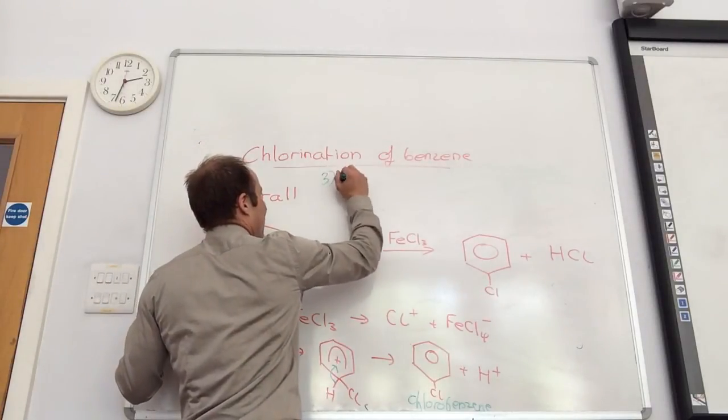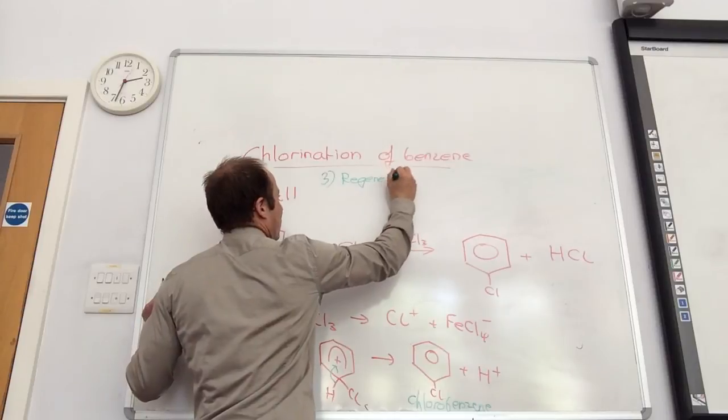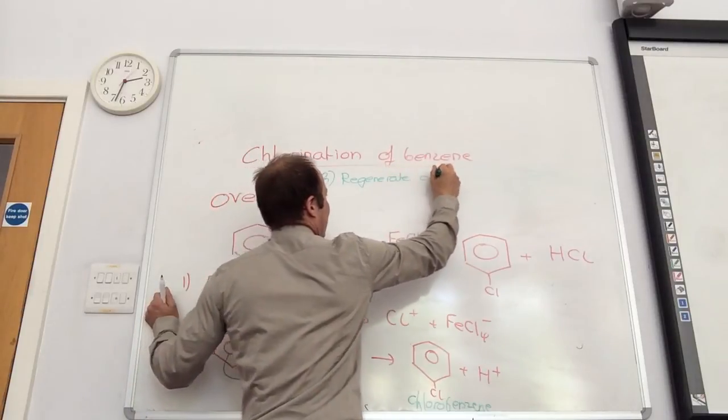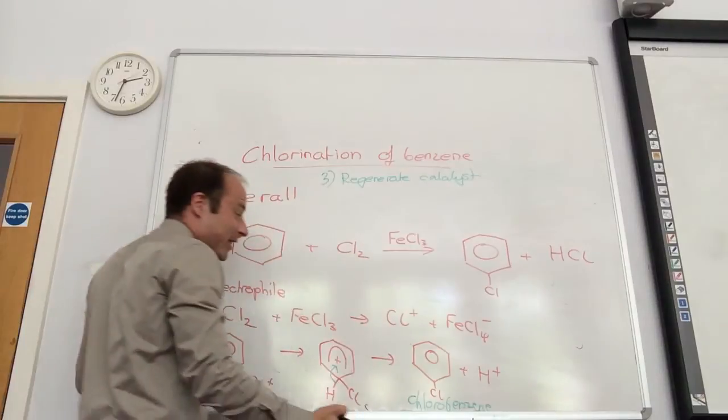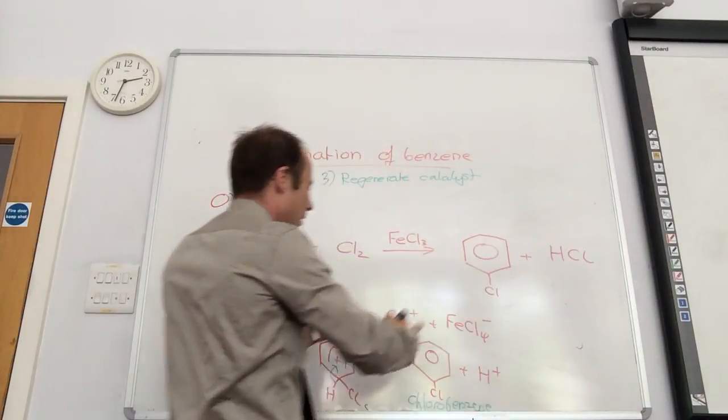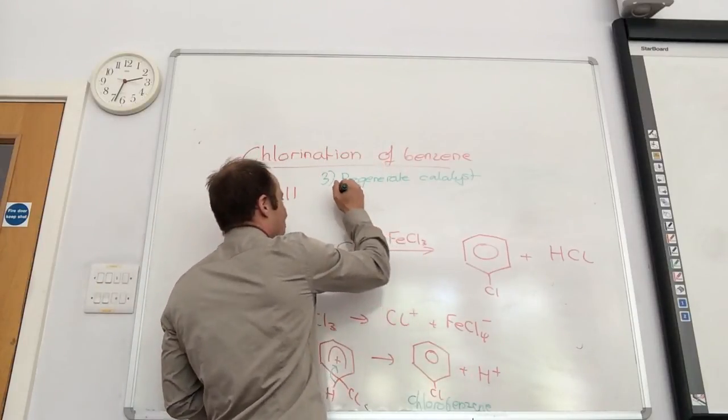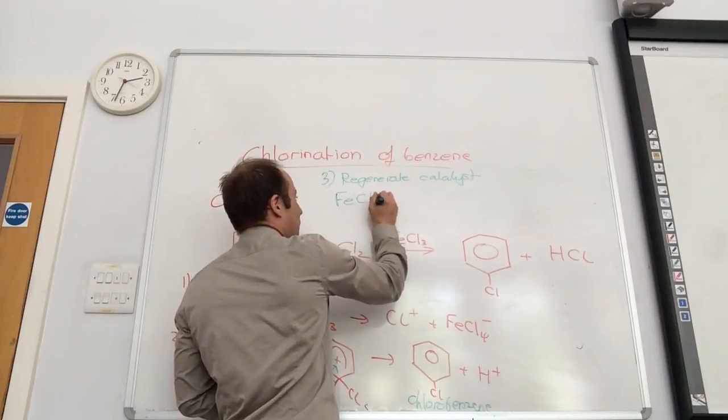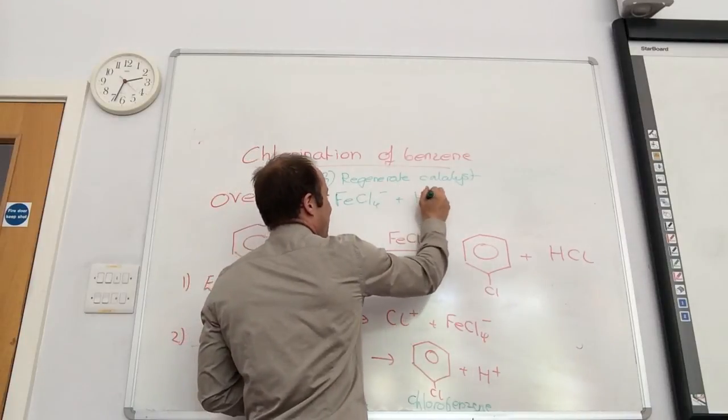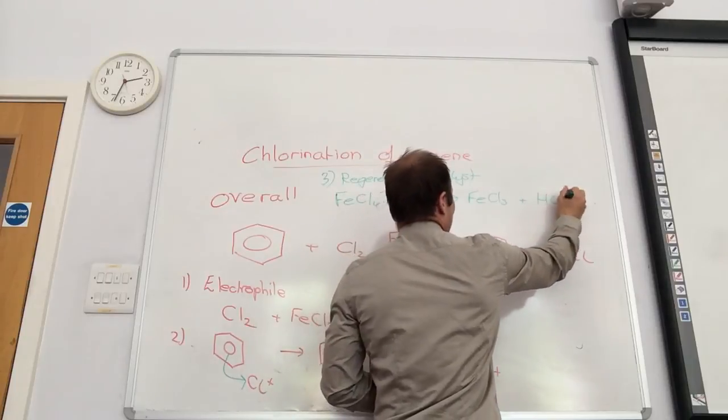Regenerate catalyst. And you can predict that, because you've got your product HCl. Have you made HCl here? Oh, no. Okay. So you've got to have these two. So you have FeCl4- plus H+ gives me FeCl3 and HCl.